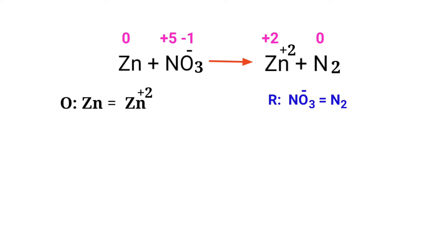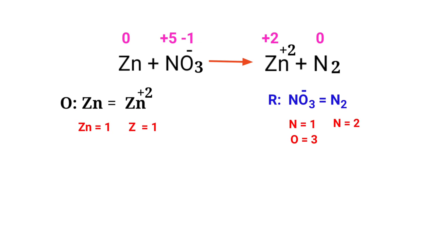Now balance the number of atoms in the two half reactions. In the oxidation half reaction, the number of atoms are already balanced. In the reduction half reaction, to balance the nitrogen atoms, we need to put a coefficient of 2 in front of NO3-.